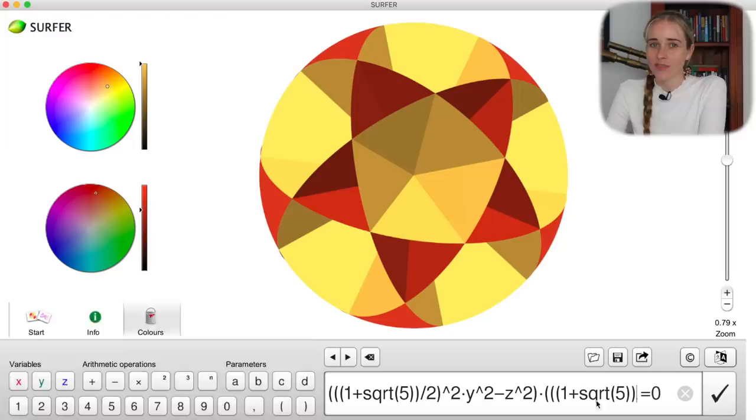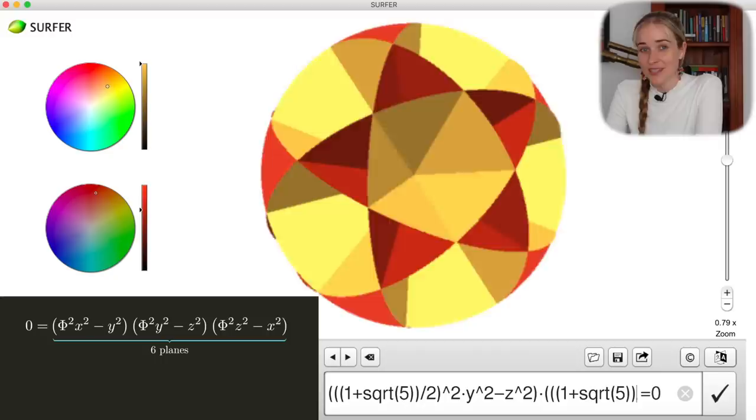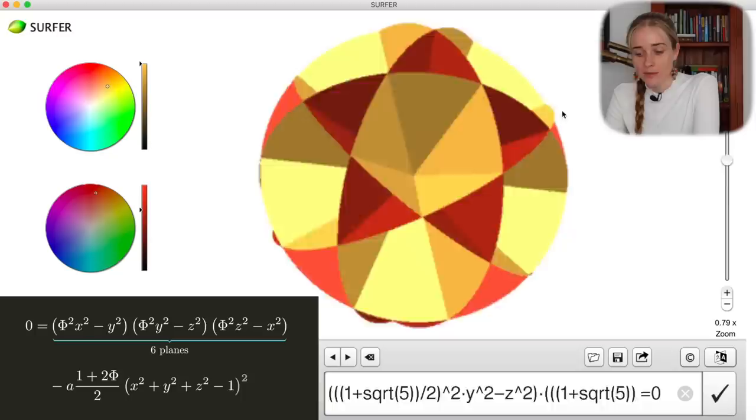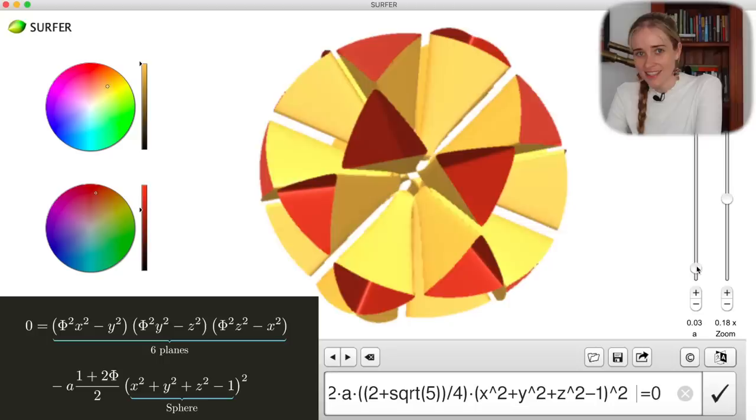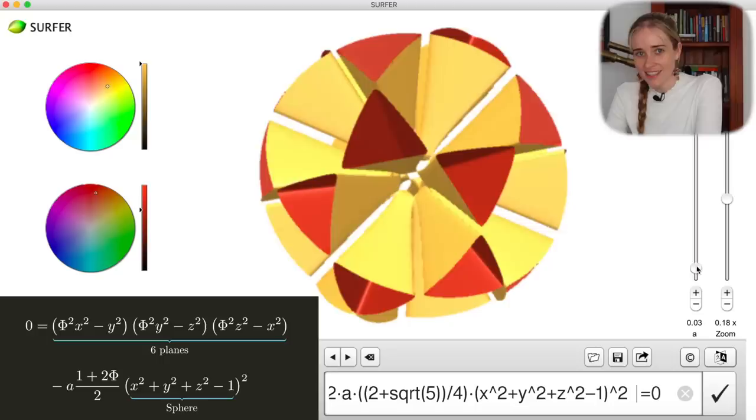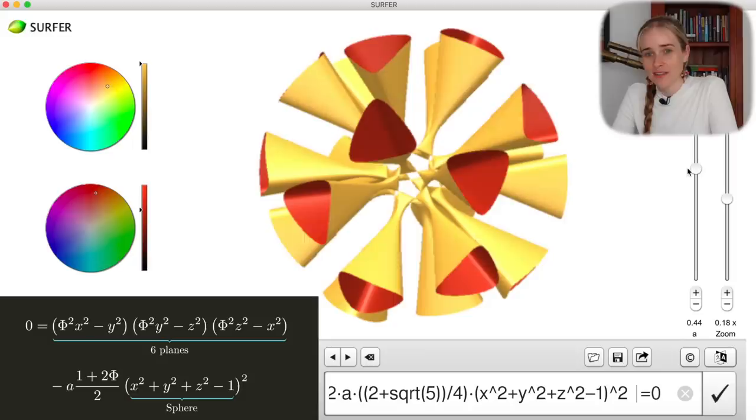We can see this shape in surfer as well. These are the six symmetry planes that you saw before. They all look like disks because surfer clips big infinite surfaces by a sphere in order to display them. This is not yet what bath sextic looks like though.